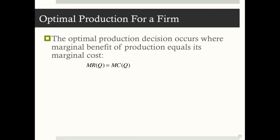The optimal production decision for any firm occurs where marginal revenue equals marginal cost. We have a marginal revenue function that depends on Q and a marginal cost function that depends on Q. We set them equal and solve for Q* — the optimal quantity. At this point, profit for the firm is at its highest.